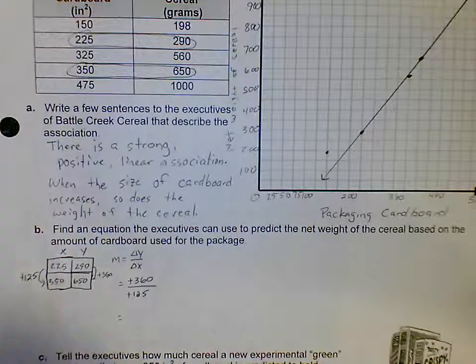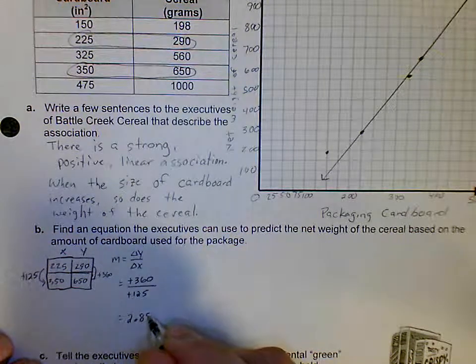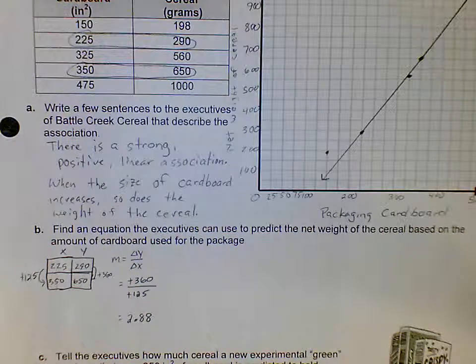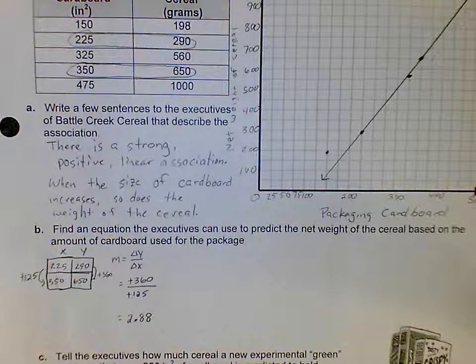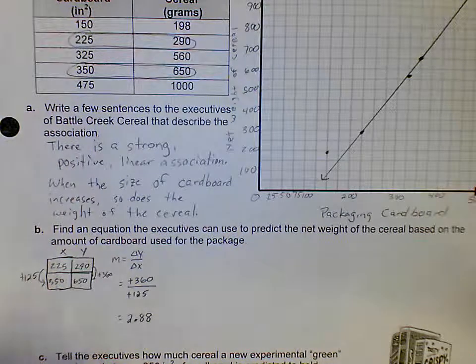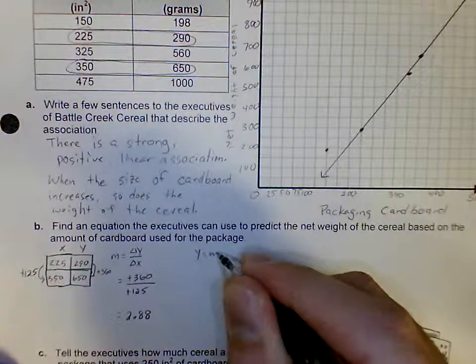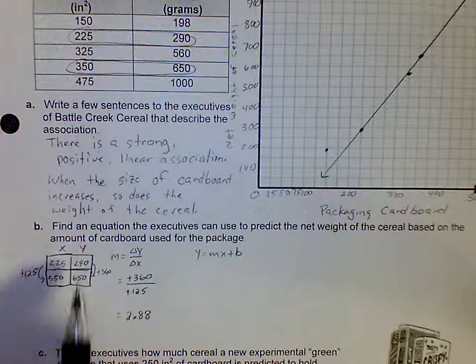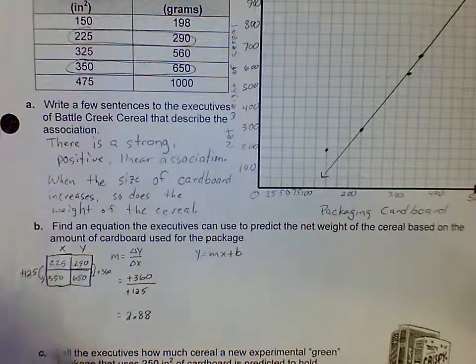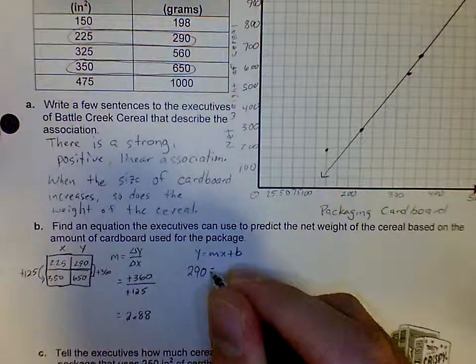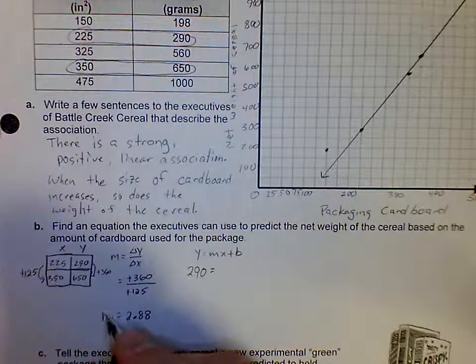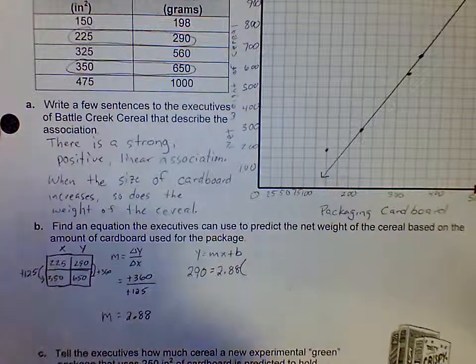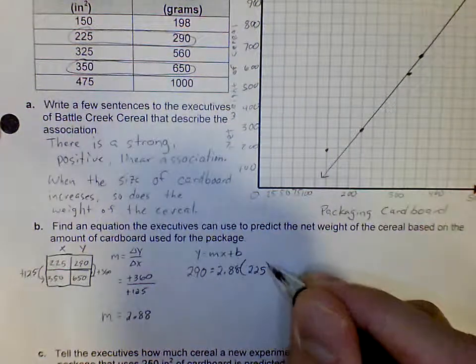Now we have to find your y-intercept. The way we calculate it is: remember we take our equation y equals mx plus b and we plug in everything we know. I'll just use this first point, 225 and 290. So I'm going to say 290 equals our m, which is 2.88, times our x, which is 225, plus b.